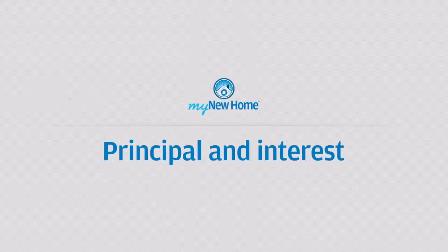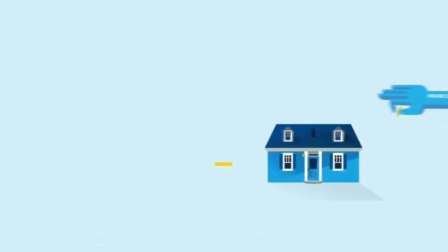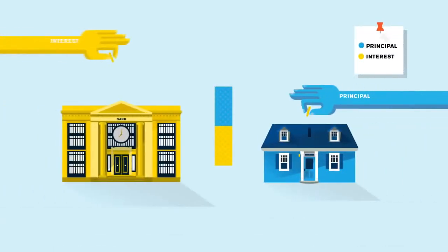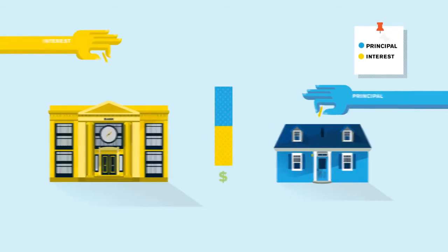Principal is the money that's being applied to pay off the loan. Interest is the portion of the payment that's being given to the mortgage company, essentially because they're lending you the money — that's the portion you're paying back to them for that ability.